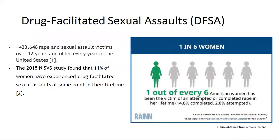Over 400,000 sexual assaults occur every year in the United States. Frequently a victim is administered a drug to incapacitate them and prevent them from consenting. Around 11% of women experience drug facilitated sexual assaults in their lifetime. Common drugs utilized in drug facilitated sexual assaults include benzodiazepines, antidepressants, antihistamines, hallucinogens, opioids, and muscle relaxants. Due to how frequently sexual assaults take place it is important that there are analytical methods that can be used to identify these drugs.